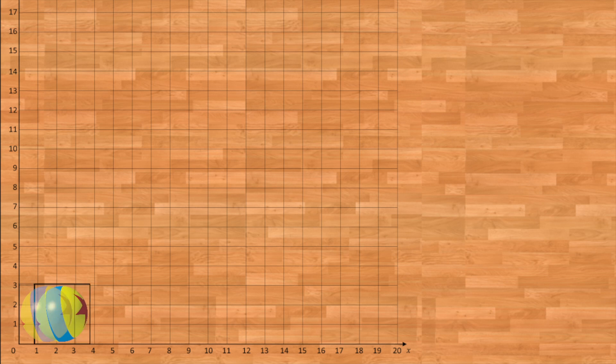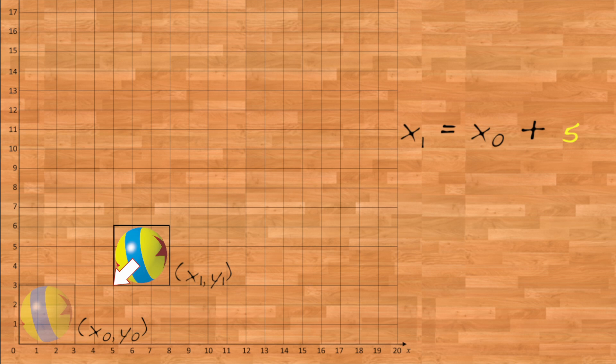Suppose we translate by an amount of 5 in x and 3 in y. Pick a point, x0, y0, in the image we're translating. That point goes to a point x1, y1 given by x1 equals x0 plus 5, y1 equals y0 plus 3.